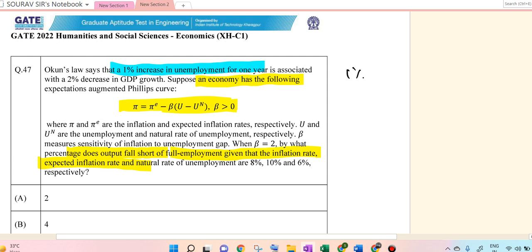And a 2% fall in GDP. So π = πᵉ + β(u - uₙ). We have 8% = 10% - 2(u - 6%). So 8% = 10% - 2u + 12%.